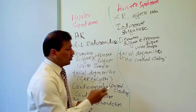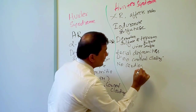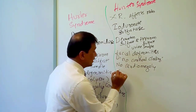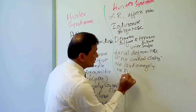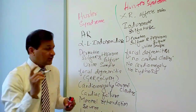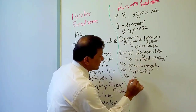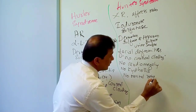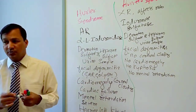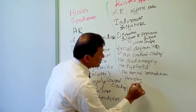Hunter syndrome patients do not have cardiomegaly, no acute angle gibbus or kyphosis, and no mental retardation — these are the features you do NOT see in Hunter syndrome but do see in Hurler. However, hearing loss is seen in Hunter syndrome, just like Hurler.